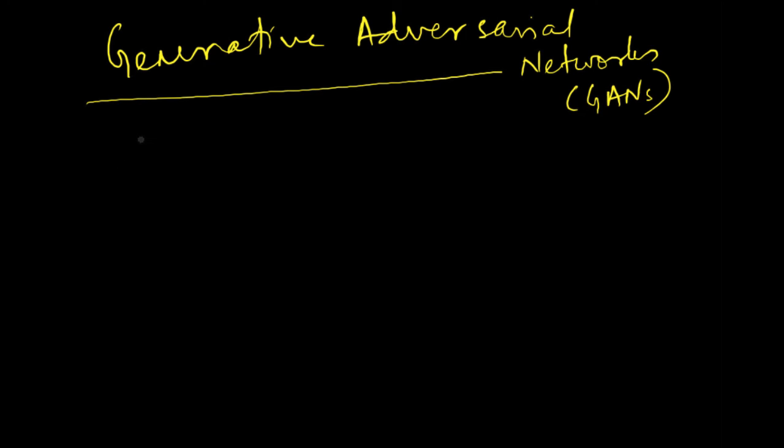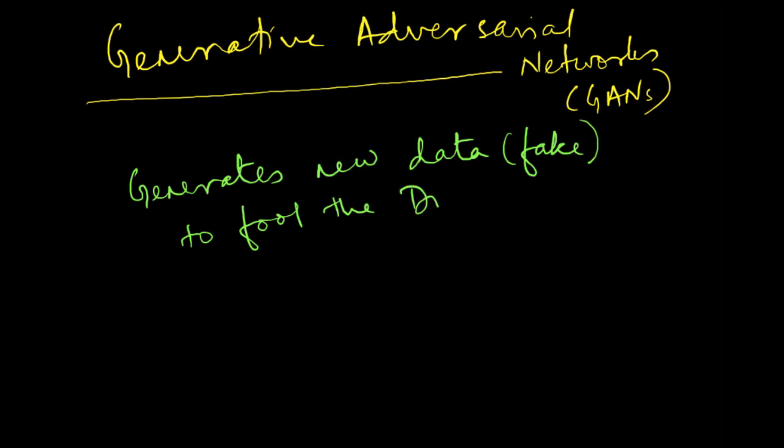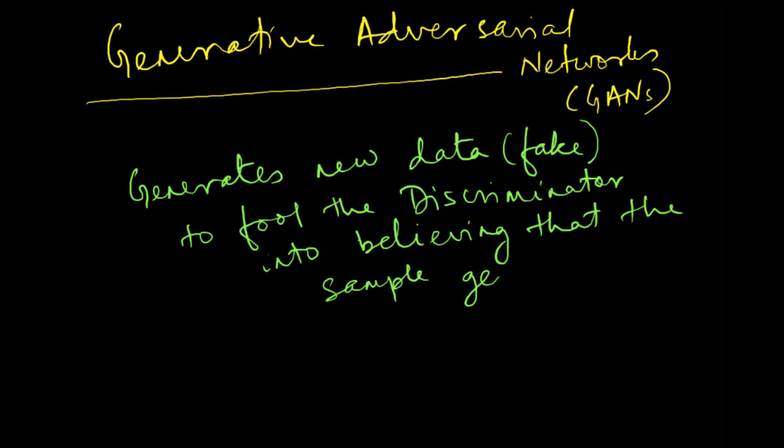So how do you do that? Basically the first step, this is a two-step process which goes around in cycles. The first step is that the generative model generates new data which is fake, purely imaginary, to fool the discriminator into believing that the sample generated is real.